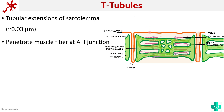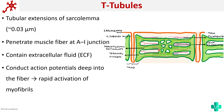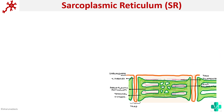T-tubules are extensions of the sarcolemma that penetrate the muscle fiber at the AI junction — the junction between the thick and thin bands. They basically contain extracellular fluid. The main function of these T-tubules is to conduct the action potential deep into the fiber so that rapid activation of myofibrils can occur.